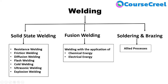In solid state welding, pressure is the main factor. The different types of solid state welding include resistance welding, friction welding, diffusion welding, flash welding, cold welding, ultrasonic welding, and explosion welding. These processes will be discussed in further lessons.